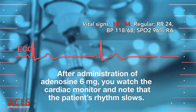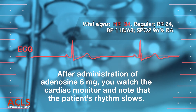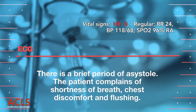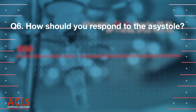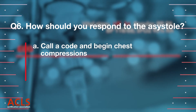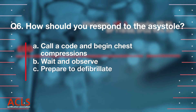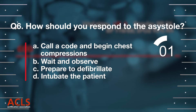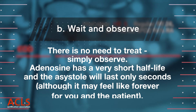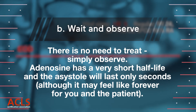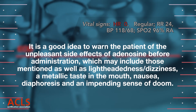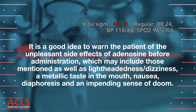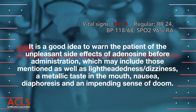After administration of adenosine 6 mg, you watch the cardiac monitor and note that the patient's rhythm slows. There is a brief period of asystole. The patient complains of shortness of breath, chest discomfort, and flushing. There is no need to treat the asystole — simply observe. Adenosine has a very short half-life, and the asystole will last only seconds, although it may feel like forever for you and the patient. It is a good idea to warn the patient of the unpleasant side effects of adenosine before administration, which may include lightheadedness or dizziness, a metallic taste in the mouth, nausea, diaphoresis, and an impending sense of doom.